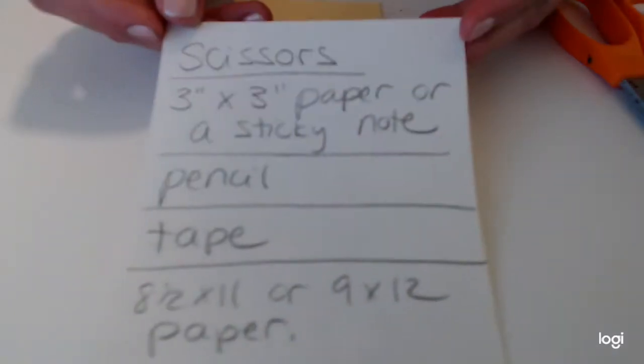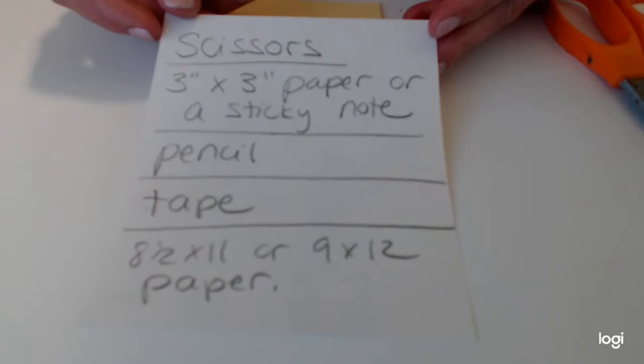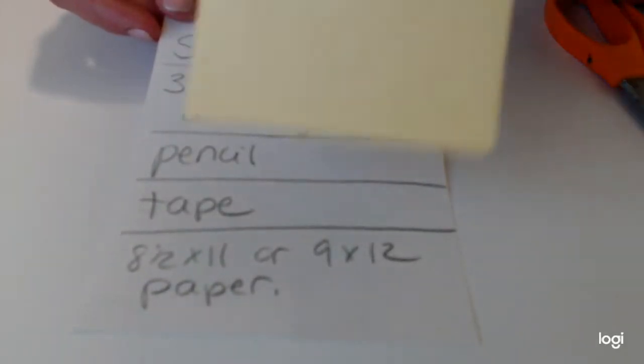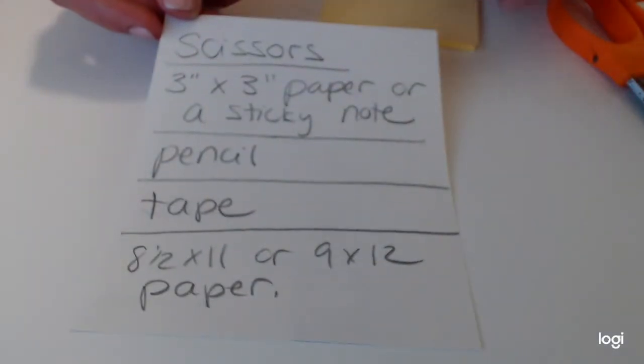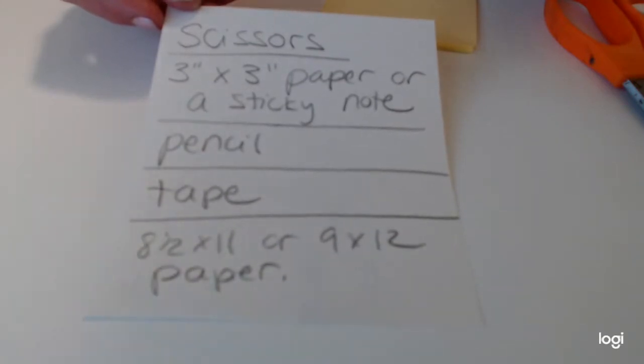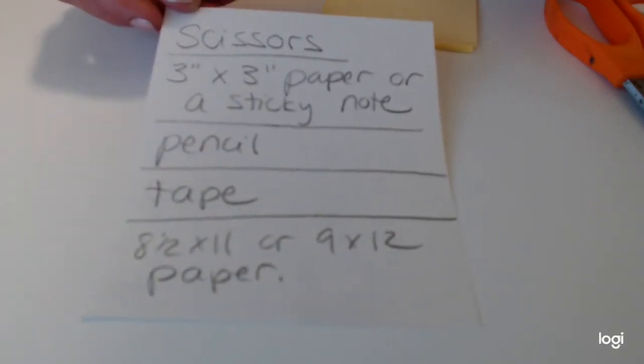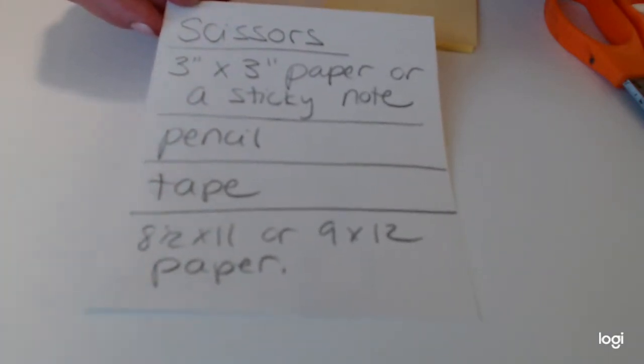So we're going to create our own shape to make our own tessellation, and there's a few things you're going to need. You'll need scissors and a 3 inch by 3 inch square piece of paper, or if you happen to have sticky notes around, that works perfectly. A pencil, tape, and then you'll need to trace it onto a piece of paper—an 8 and a half by 11 copy paper, or if you have construction paper, probably a 9 by 12, but somewhere in that range would work perfectly.